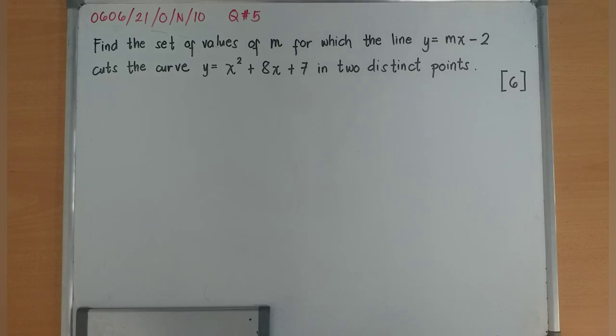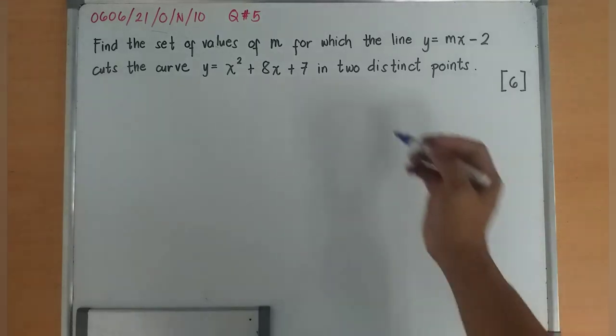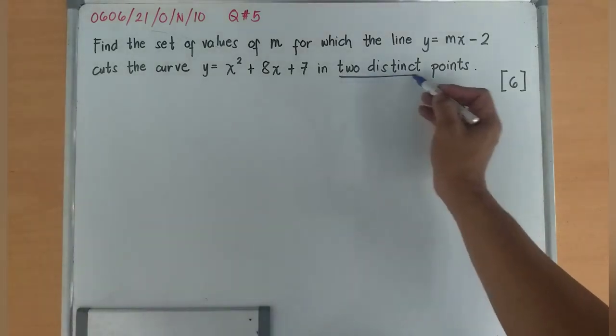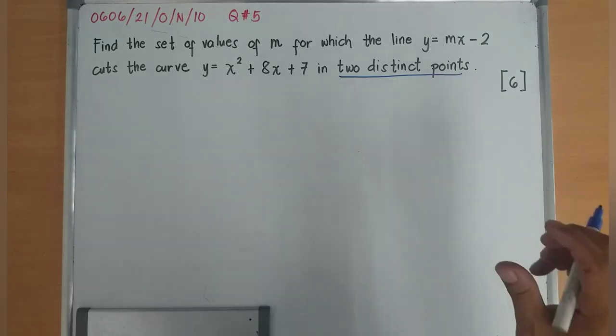So again, this is a problem about quadratics. And when we are dealing with problems about quadratics, we cannot get away from b² - 4ac. And in here, there are two distinct points, intersections.